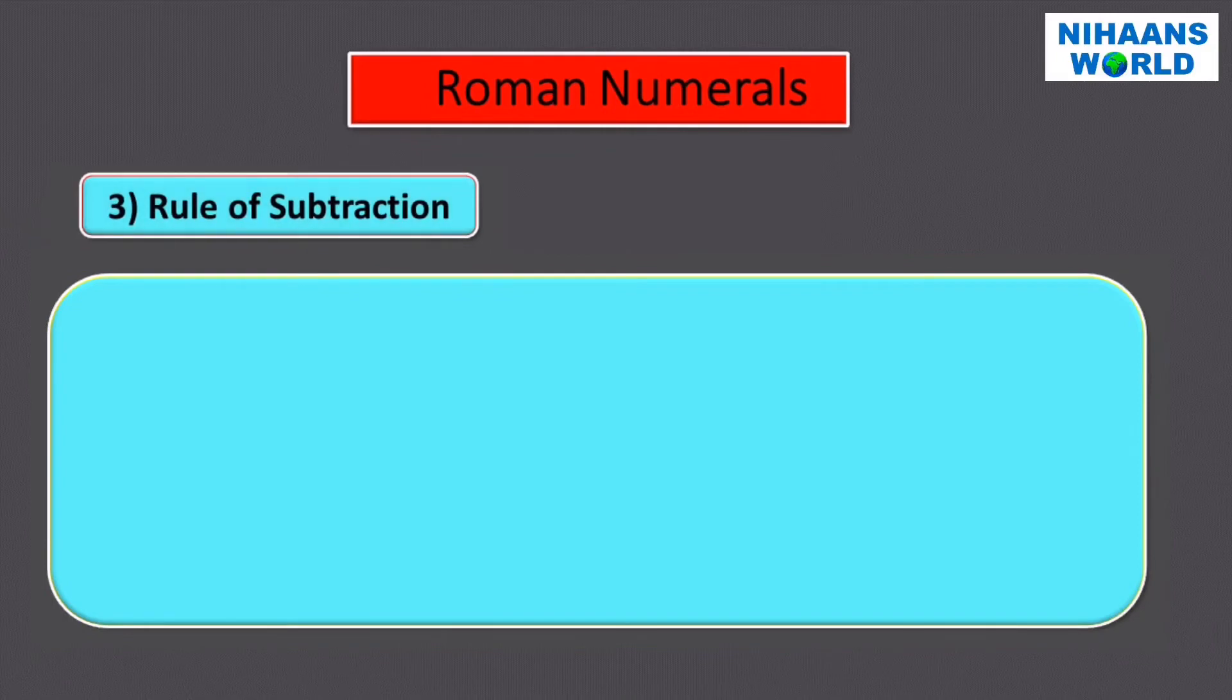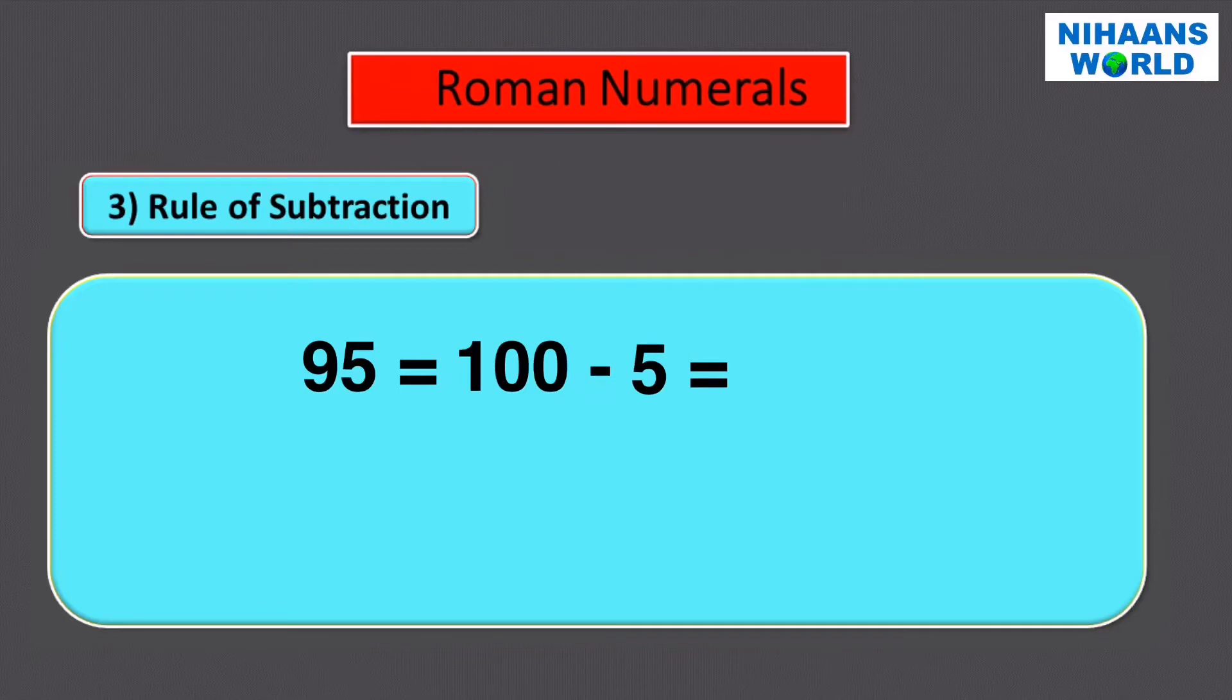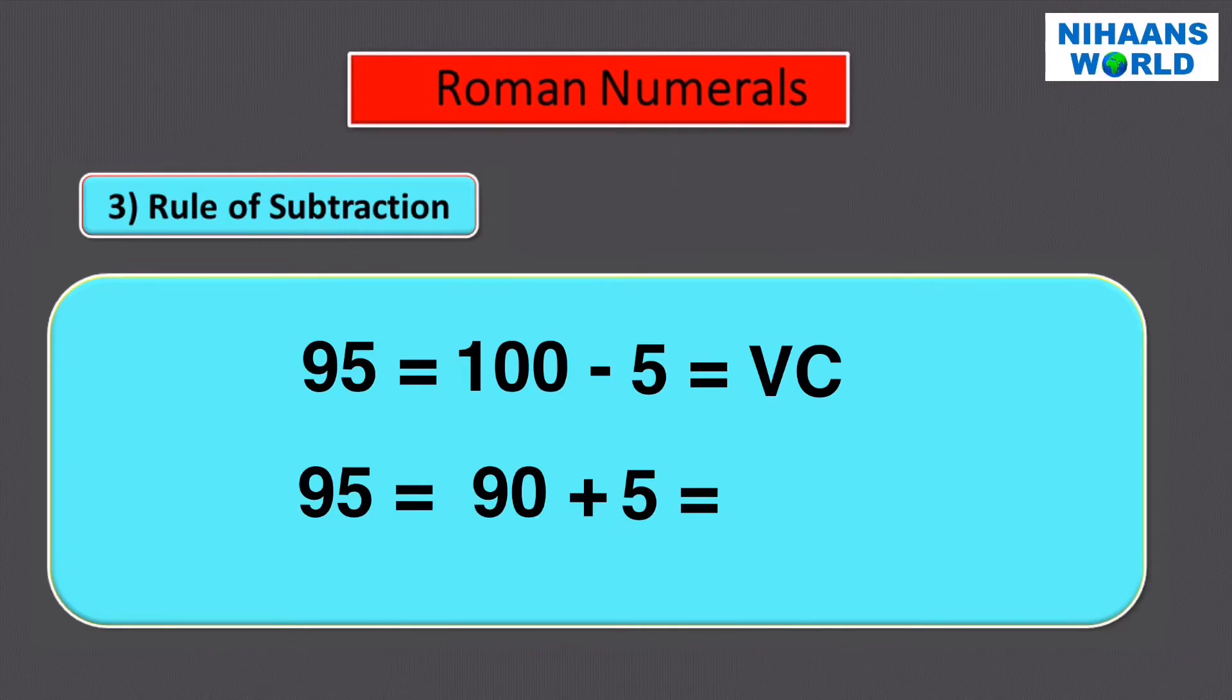Rule of Subtraction two: The symbols V, L, and D can't be subtracted from any number. For example, ninety-five can't be written as one hundred minus five equals V C. Ninety-five should be written as ninety plus five equals X C V.